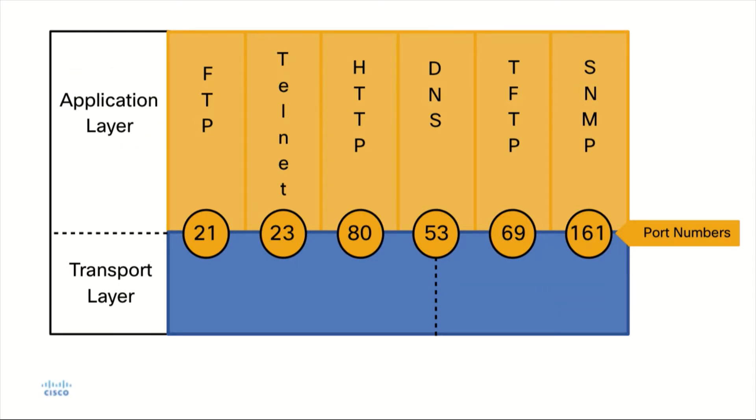In a previous video we discussed some of the applications that make use of the transport layer and their port numbers. In this example we're visually showing you the TCP and UDP port numbers that are used to support different conversations between networking devices.